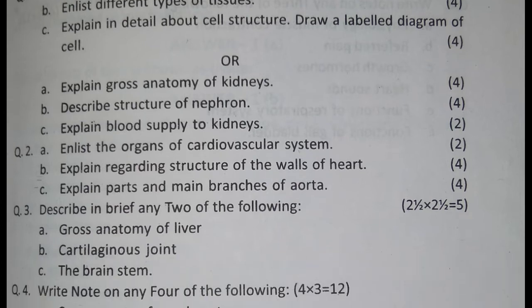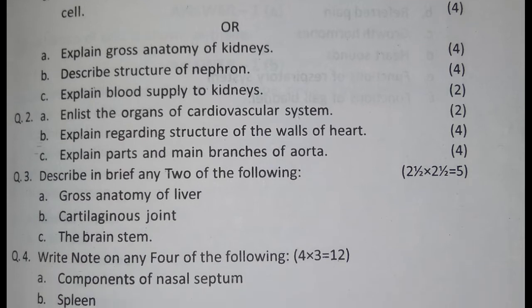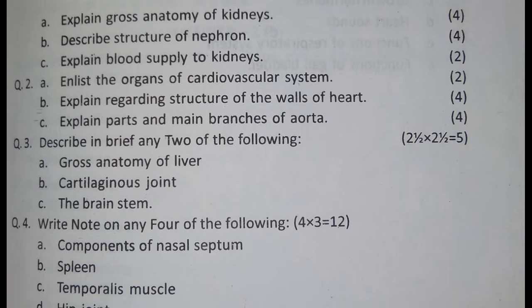Question number 2: Enlist the organs of cardiovascular system, 2 marks. Second, explain regarding structures of the wall of heart, 4 marks. Question C: Explain parts and main branches of aorta, 4 marks.